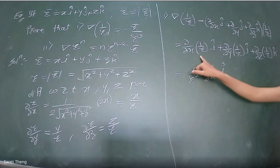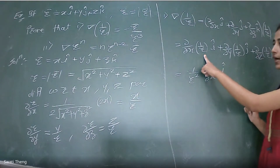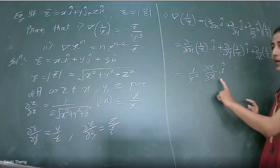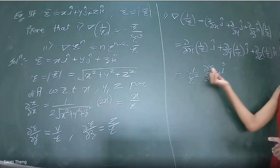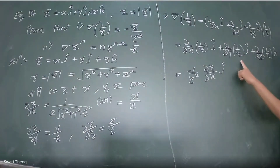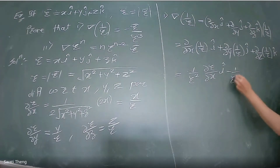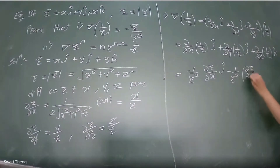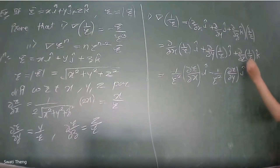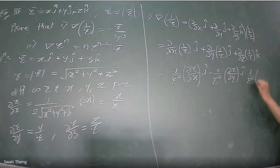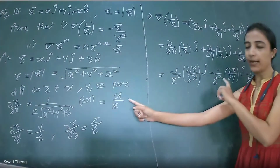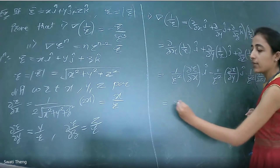Similarly for remaining terms: -1/r² · ∂r/∂y ĵ and -1/r² · ∂r/∂z k̂. Substituting ∂r/∂x = x/r, we get -x/r³ î. Likewise, the second term is -y/r³ ĵ, and the third is -z/r³ k̂. Taking -1/r³ common, we get -1/r³ (x î + y ĵ + z k̂), which equals -r̄/r³. Therefore ∇(1/r) = -r̄/r³.